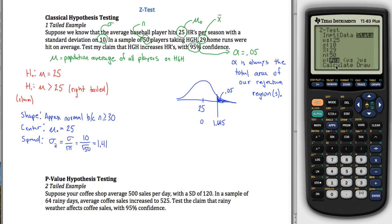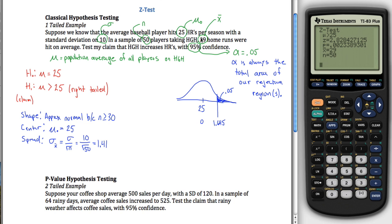The calculator gives you information, and the most important piece for classical hypothesis testing is the z-value. That z-value tells you where 29 home runs falls on our picture. In other words, 29 home runs is way out to the right at a z-score of 2.83. Because 2.83 is greater than 1.645, it falls in the rejection region.